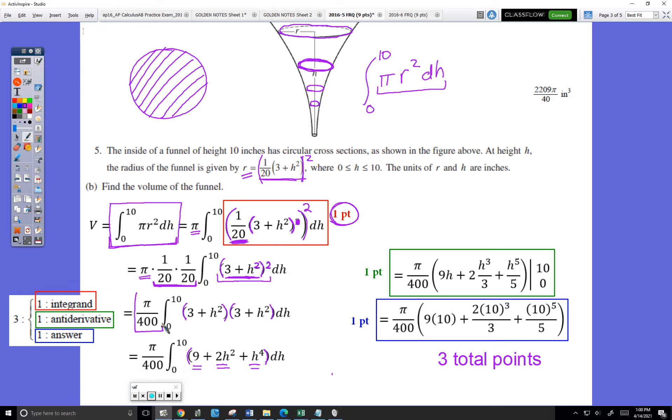Here to make the writing easier, I change this to π over 400. You wouldn't actually have to do that. So now the antiderivative becomes, here's my constant π over 400. The antiderivative of 9 will be, because that's a dh, 9h.